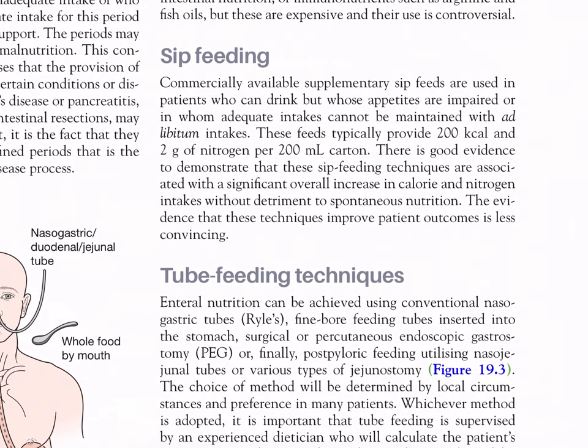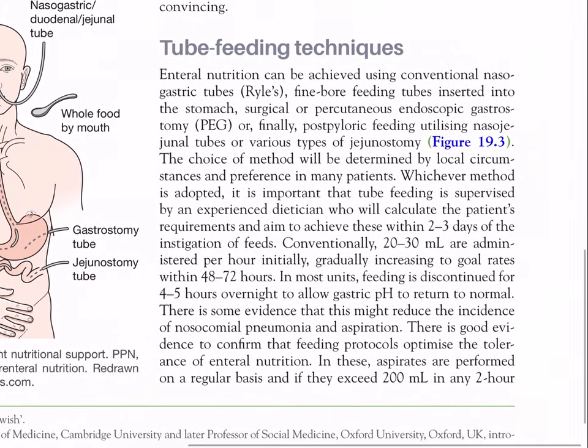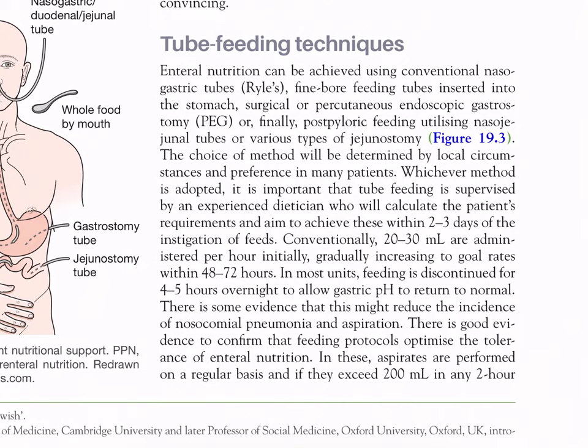Tube feeding techniques: enteral nutrition can be achieved using conventional nasogastric tubes, fine-bore feeding tubes inserted into the stomach, surgical or percutaneous endoscopic gastrostomy (PEG), or post-pyloric feeding utilizing naso-jejunal tubes or various types of jejunostomy. The choice of method is determined by local circumstances and preferences. It is important that tube feeding is supervised by an experienced dietitian who will calculate the patient's requirement and aim to achieve these within two to three days.